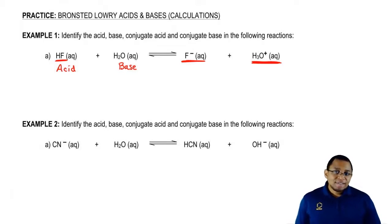Then we're going to say HF gives away an H plus to become F minus. Since we're taking away an H plus, this must be the conjugate base.